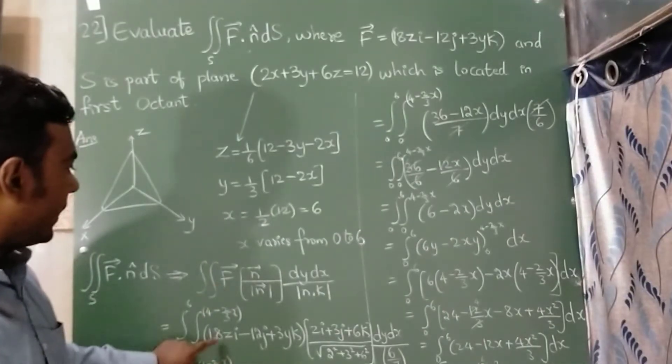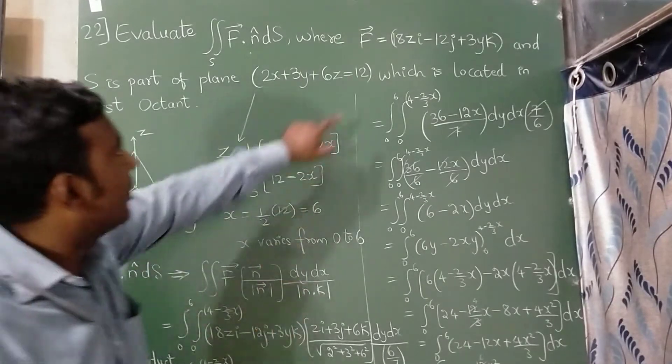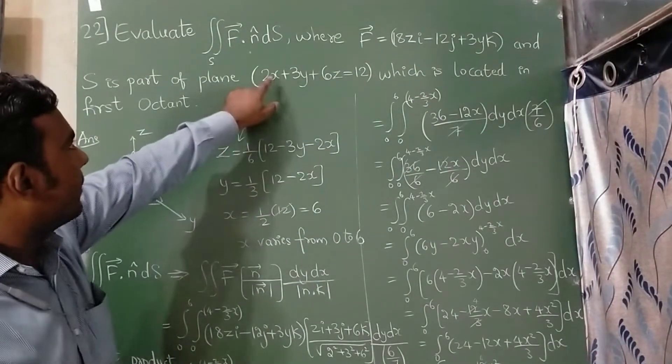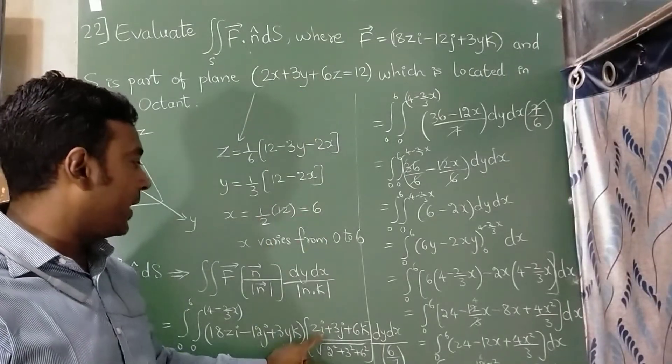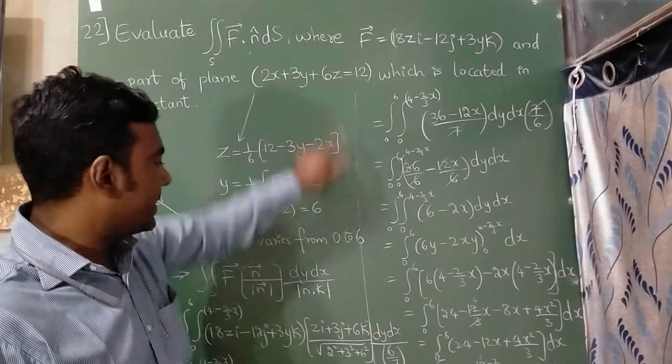Now this vector F is 18z i minus 12j plus 3y k from here, given question. Now this n is taken from here. So x, y, z instead of that I have taken i, j, k. So it is 2i, 3j and 6k.